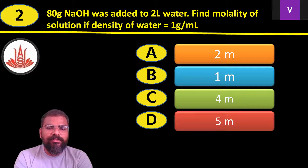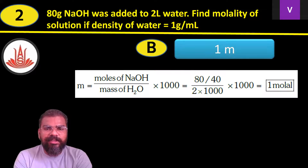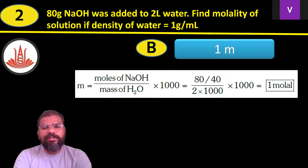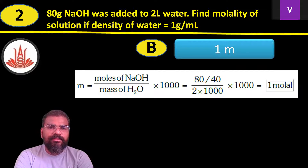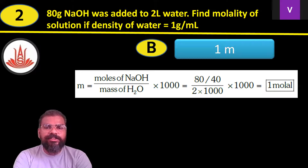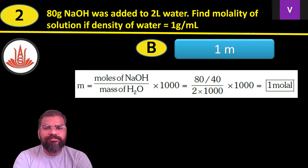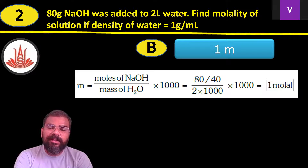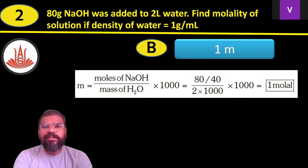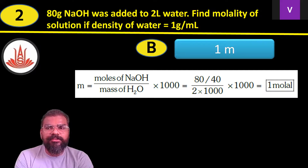Very easy question. Molality = moles of NaOH ÷ mass of H₂O (in kg) × 1000. Moles of NaOH = 80 ÷ 40 = 2 moles. Dividing by mass of water 2 liters × 1000: molality = 2 ÷ 2 = 1 molal. So Option B, 1 molal, is the correct answer.